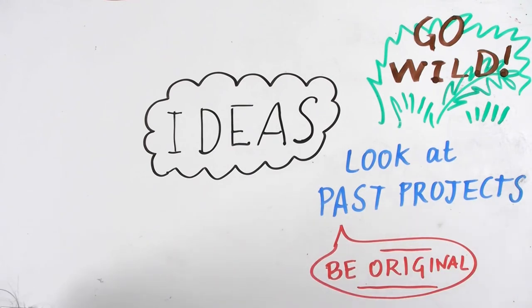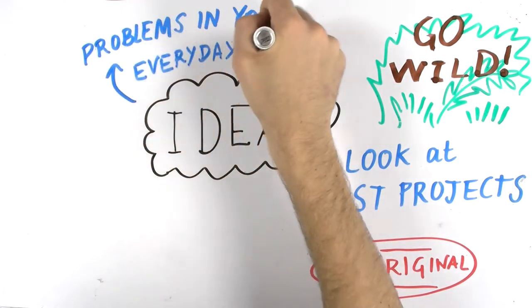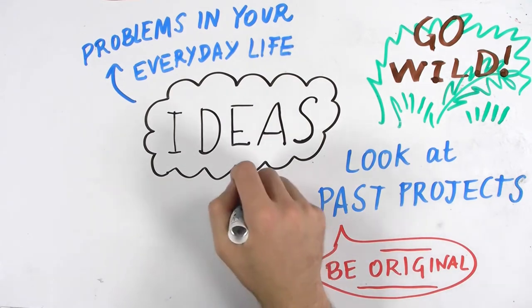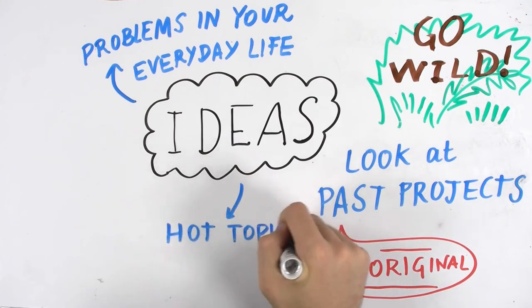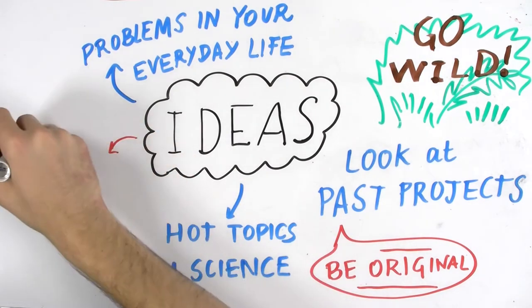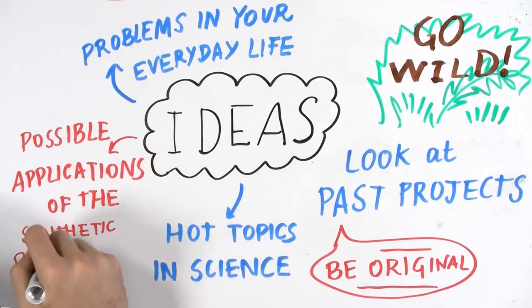Try to think of what annoys you in your everyday life, what problems you would like to solve, and what you would enjoy working on. You can go through hot topics in scientific journals and news articles, then think about possible applications of synthetic biology techniques you have learned and other interesting technologies you know.